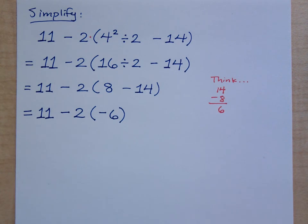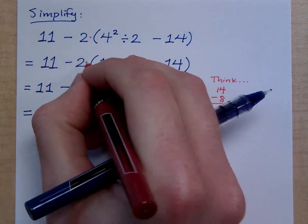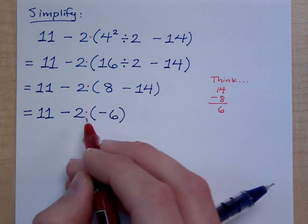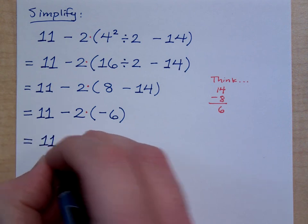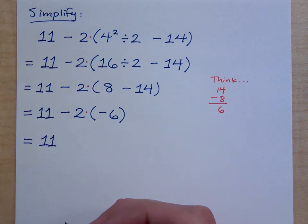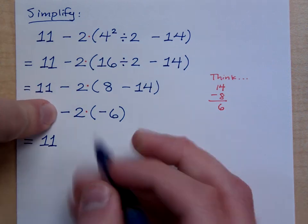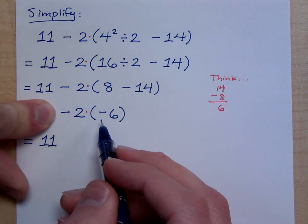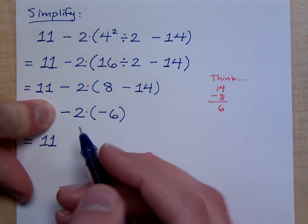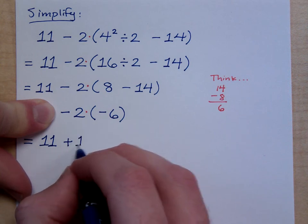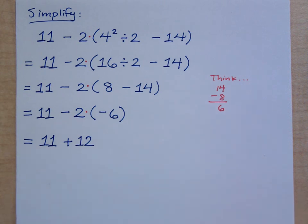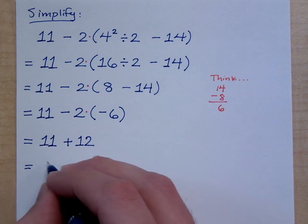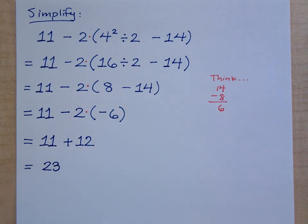What is the next step? We've got multiplication. Remember how we said this 2 right next to the parentheses is multiplication? It's still multiplication all the way down, so this comes before the subtraction can happen. That's 11 — just bring it down. We have negative 2 times negative 6. What is a negative times a negative? It's a positive — positive 12. So now I've got a nice easy problem: 11 plus 12, which is 23.